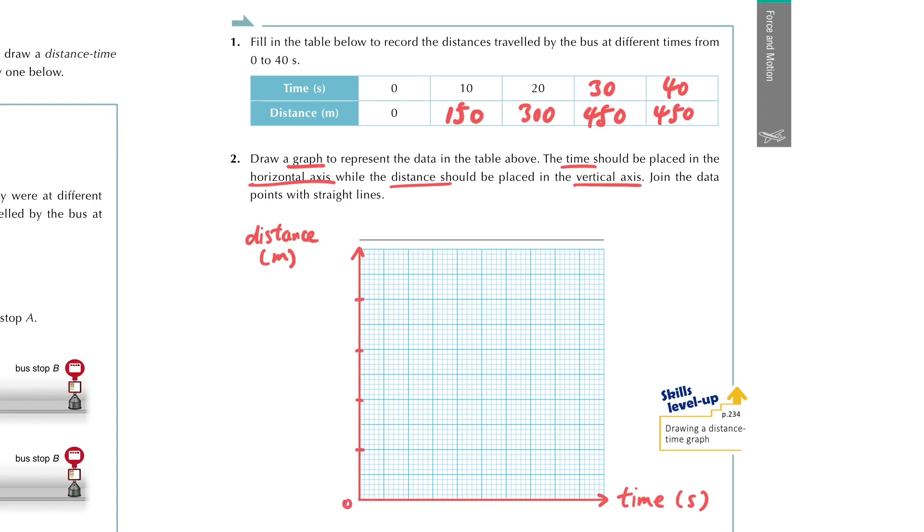And the distance in total is from 0 to 450 here. So we put down the labels. And then for the time, it is from 0 to 40. After we mark it down, we can put down the data points with small crosses.